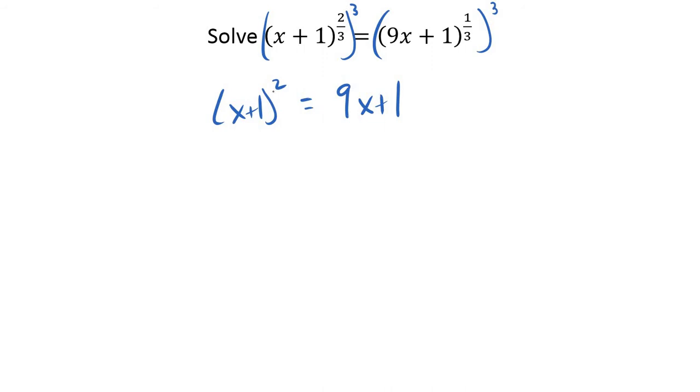Now, you're still going to have a quadratic. I can't square root this side because then I'd have a radical here. I'd be going the wrong direction. So, let's multiply this out. So, x squared 2x plus 1 equals 9x plus 1. Again, quadratic, so let's get everything on the same side.